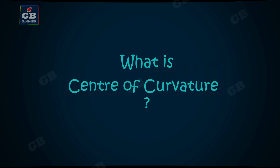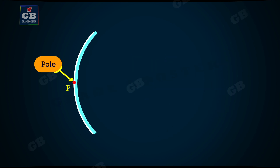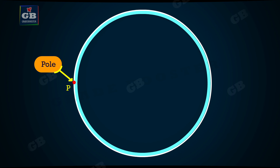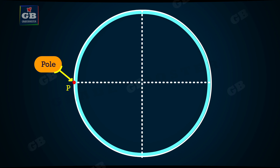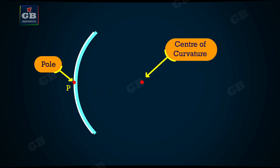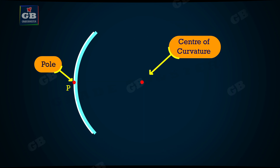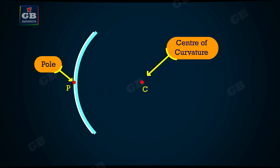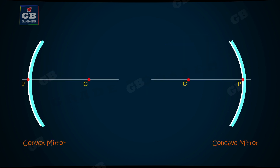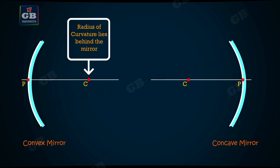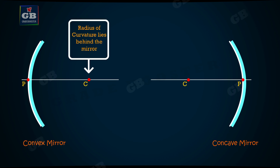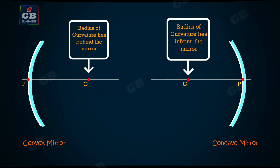Center of curvature. The reflecting surface of a spherical mirror forms a part of a sphere. This sphere has a center, which is called the center of curvature of the spherical mirror. It is represented by the letter C. The center of curvature of a convex mirror lies behind it; however, it lies in front of the mirror in case of a concave mirror.